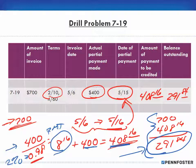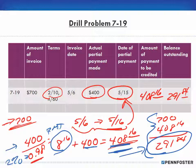That way, when the bookkeeper on the other end receives the $400 check, they know to credit $408.16. They can verify the math, and if they don't understand, the accountant will confirm it's correct — making sure your account receives the extra $8.16.